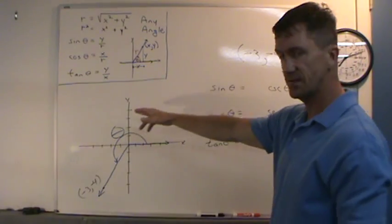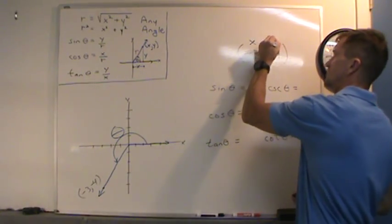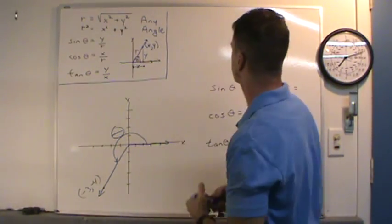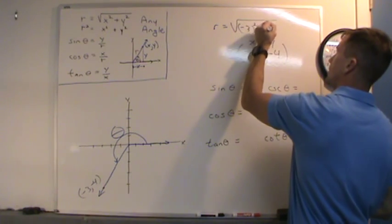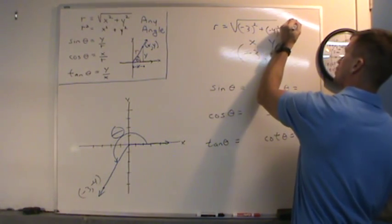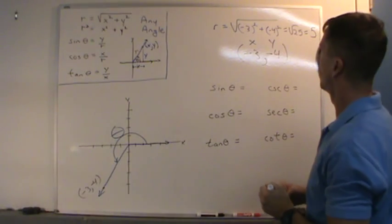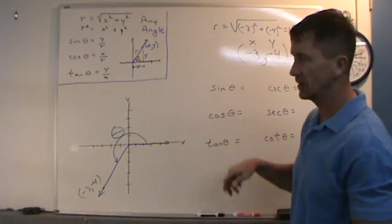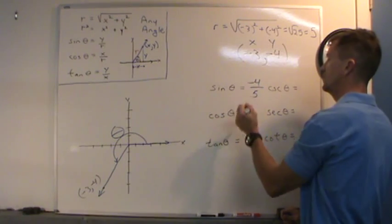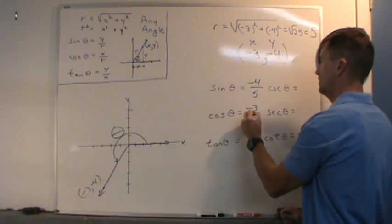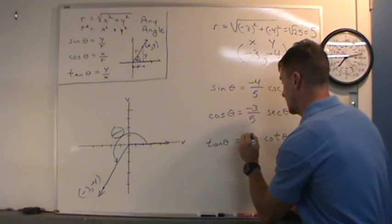Now we're going to evaluate the six trig functions of theta going through this point. We know x and y — x is negative 3, y is negative 4 — so we need R. R equals the square root of negative 3 squared plus negative 4 squared, which equals the square root of 25, which equals 5. So R is 5, x is negative 3, y is negative 4. Sine of theta is y over R: negative 4 fifths. Cosine theta: negative 3 over 5. Tangent theta is y over x: negative 4 over negative 3. A negative divided by a negative is positive, so that's 4 thirds.